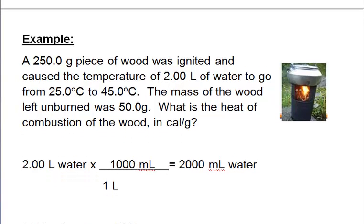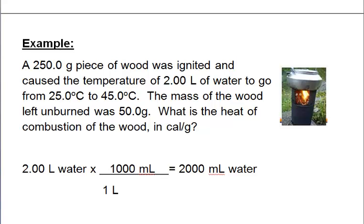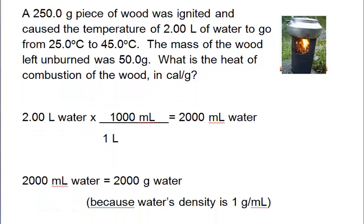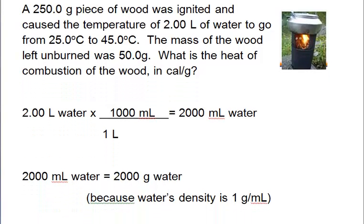But we want to know the mass, right, because q equals m times c times delta t. So remember, for water, that the density is one gram per milliliter. So if you have 2,000 milliliters, that would weigh about 2,000 grams.